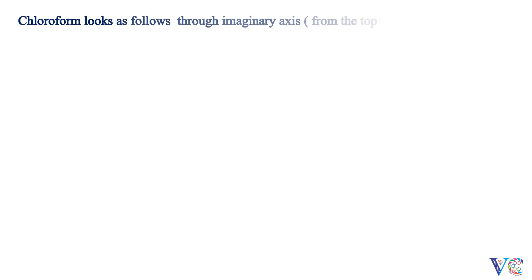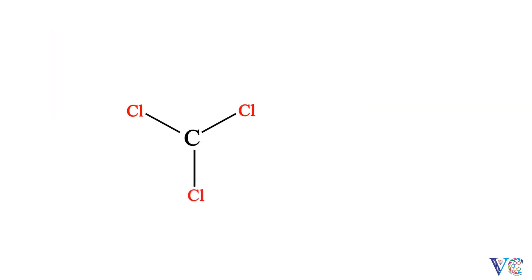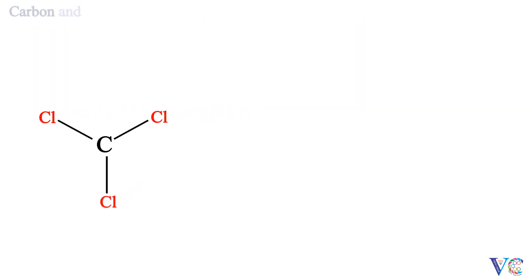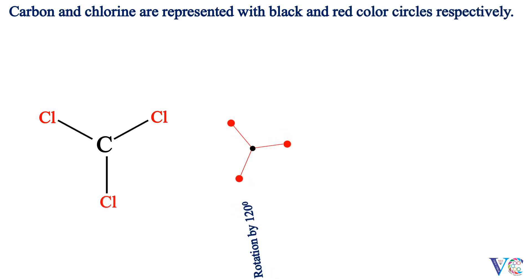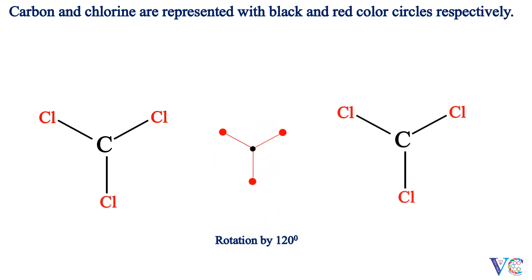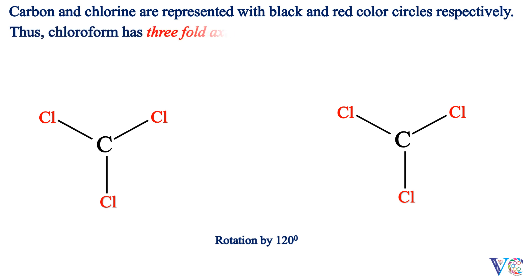Chloroform looks as follows through the imaginary axis, that is, from the top. Carbon and chlorine are represented with black and red color circles respectively. Rotation by 120 degrees results in an equivalent structure. Thus, chloroform has a three-fold axis of symmetry.